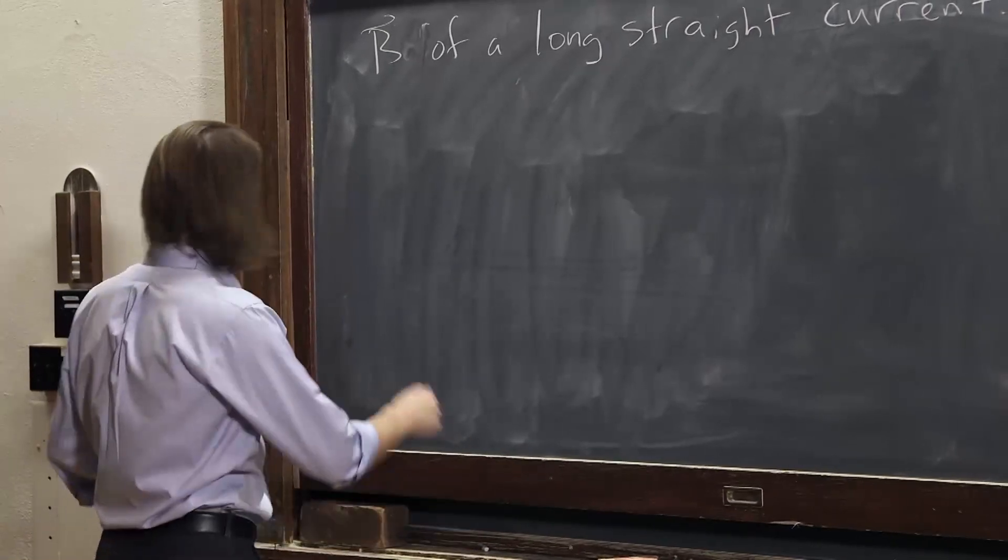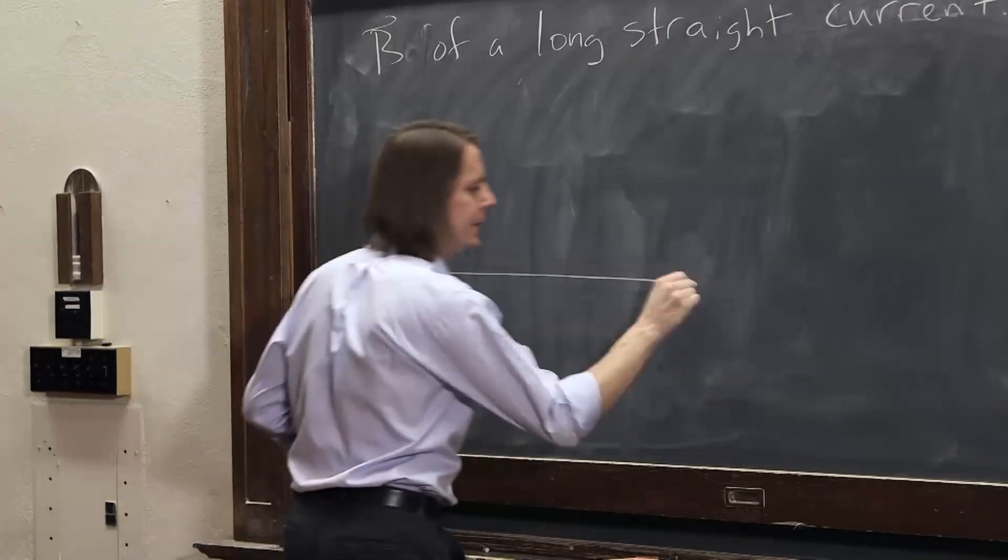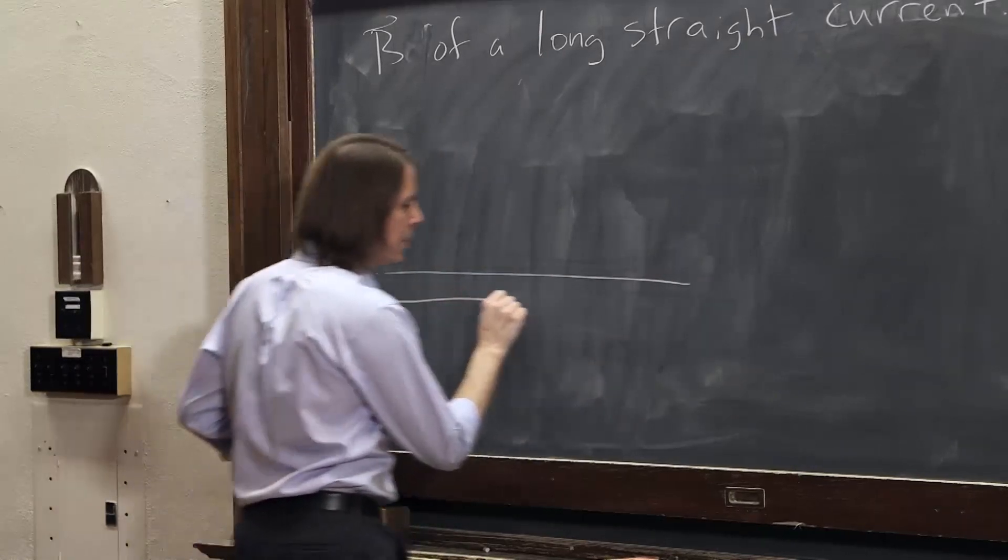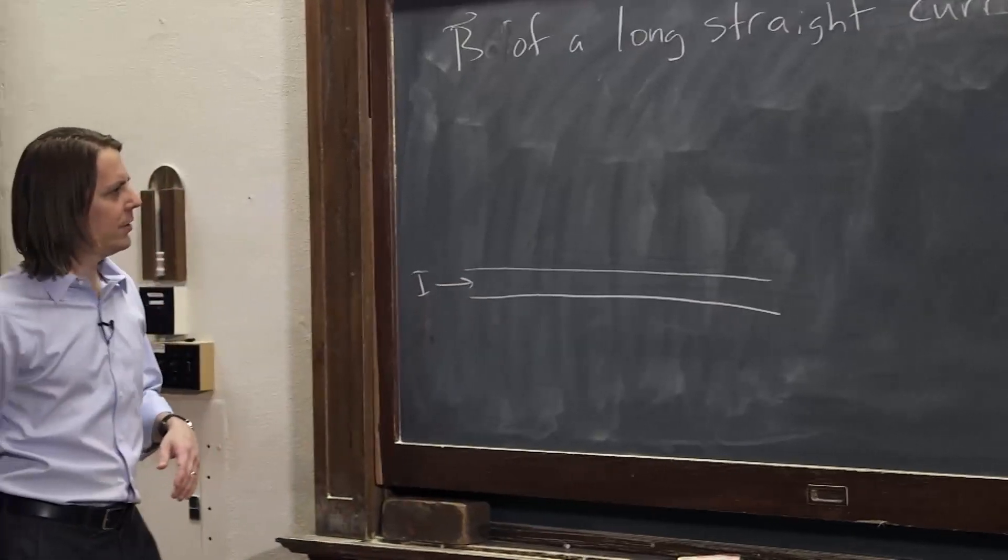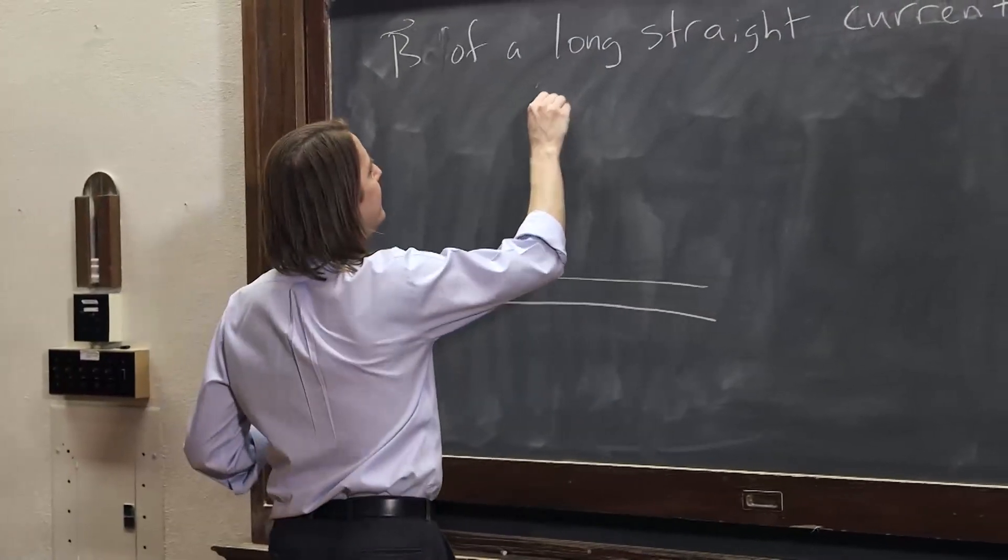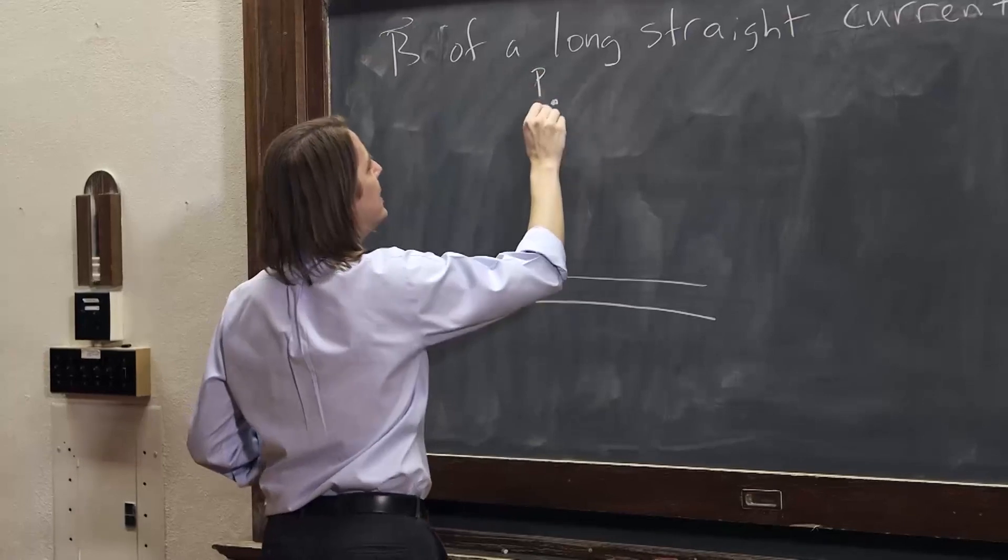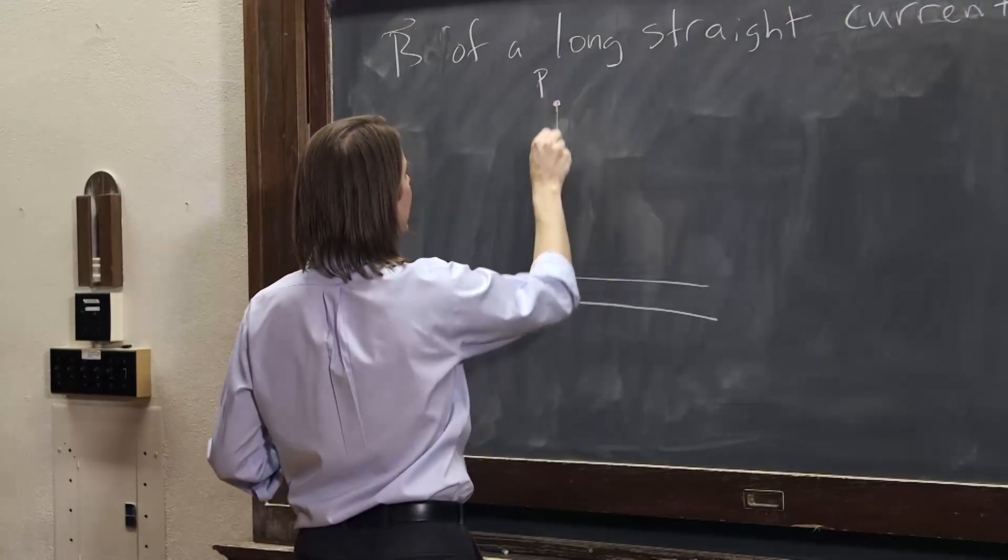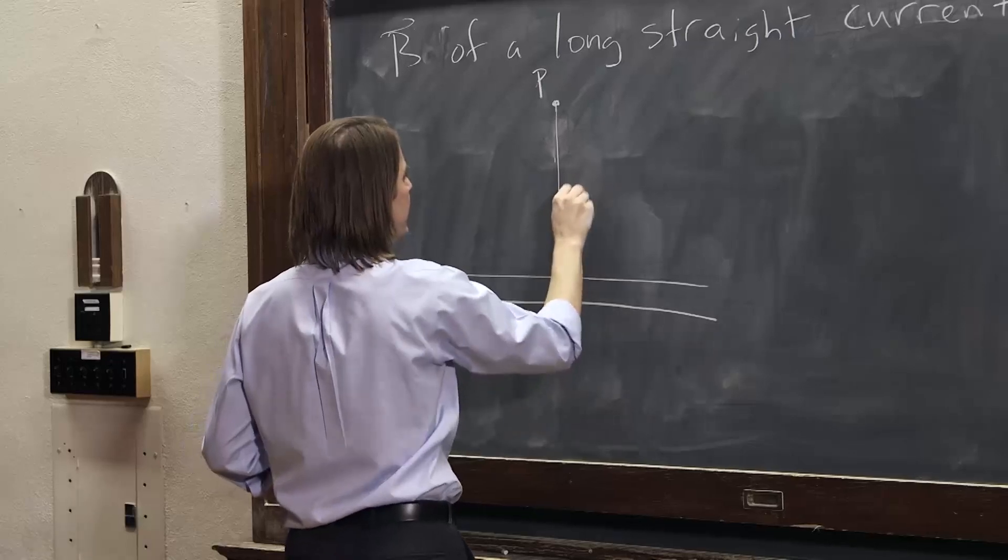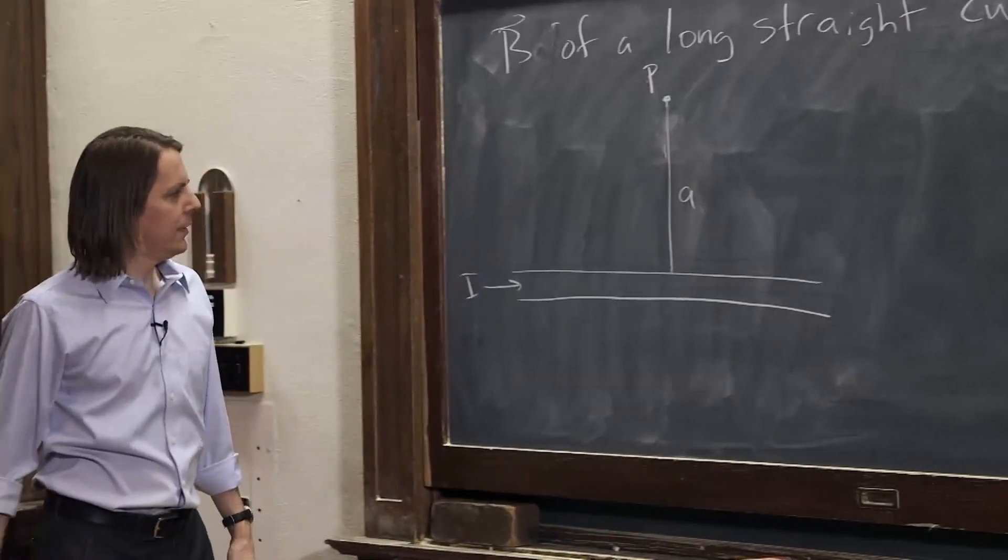So Biot-Savart, let's draw it first. There's a wire, looks suspiciously like just two lines, but it is a wire with current flowing down it like that. And we want to find the B field at some point P, at a specific distance from the wire, say A. So if we go to here, there's A.